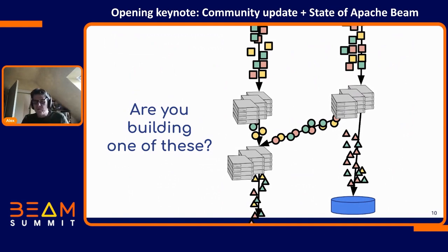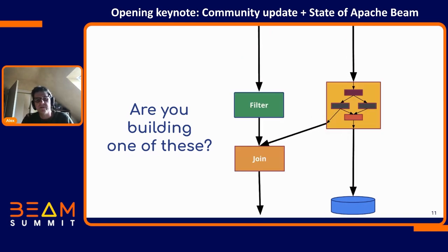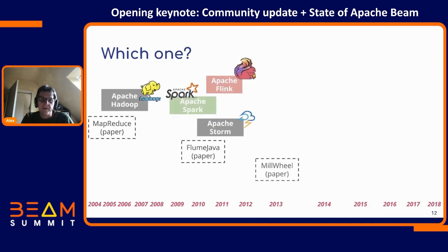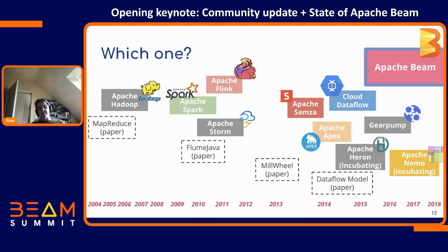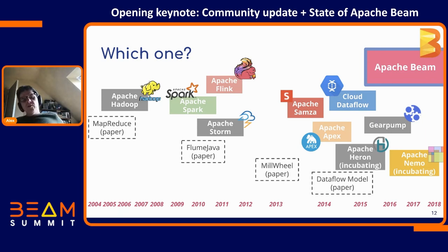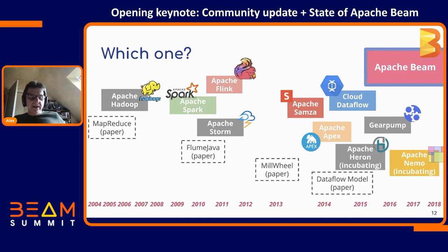What you want is to just think: I want to count this, I want to join it with that — and describe that in an easy manner. If you have those problems, Beam is here to help. You're probably familiar with other products like Spark and Flink — they're very popular — but there are many others like Storm and Samza. They all solve similar problems but have their strengths and weaknesses. Where Beam comes in is you describe your problem on an abstract level.